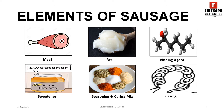Sweeteners such as honey, corn syrup, etc. play a very important role in sausage making, as they serve as food for the necessary bacteria to thrive in the meat, which in turn develops mellow flavors. Sweeteners also help to promote browning in charcuterie products. Dextrose is the most preferred sweetener in sausage making.